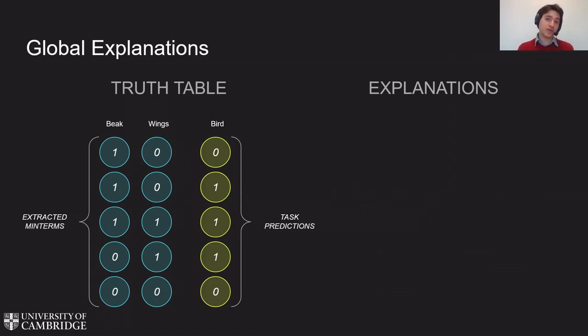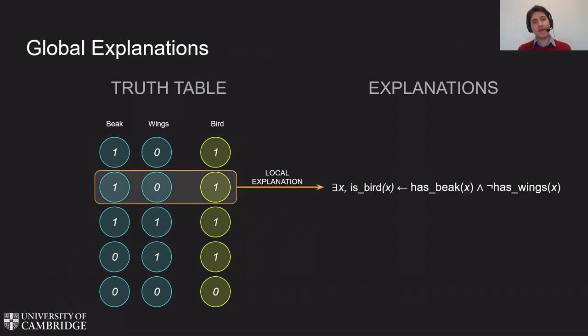Finally, to extract global explanations, we just need to build an empirical truth table with all the min terms corresponding to local explanations along with the corresponding task predictions. Notice how each row of this table corresponds to local explanations.